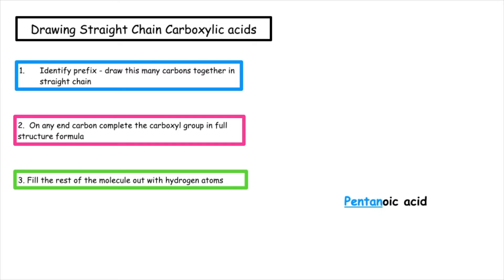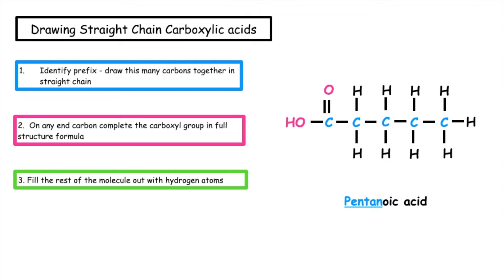Pentanoic acid — the prefix is 'pent', which tells us we have five carbon atoms that will join together in a straight chain. This time I'm going to use the end carbon on the left hand side and do my double bond O and OH. Remember we have to make sure that the O is bonded to the carbon and not the H, so be very careful with this. We then want to fill out the rest of the carbon atoms with hydrogens. Remember each carbon should have four lines coming out of it. This is how we draw pentanoic acid.